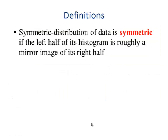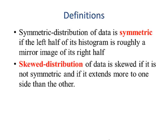Let's look at some definitions. A symmetric distribution of data is symmetric if the left half of its histogram is roughly the mirror image of its right half. Skewed distribution of data is skewed if it is not symmetric and it extends to more than one side than the other.